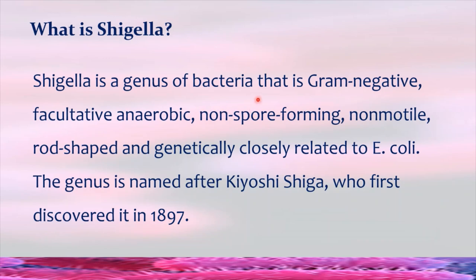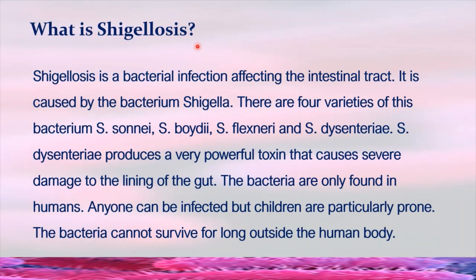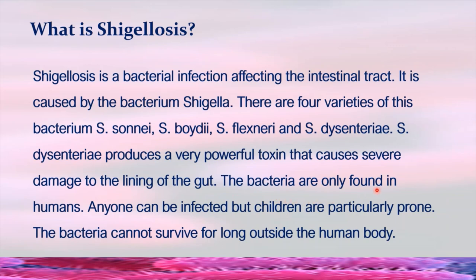What is the disease that this pathogen causes? That is Shigellosis. Shigellosis is a bacterial infection affecting the intestinal tract, caused by the bacterium Shigella. There are four varieties of this bacteria: Shigella sonnei, Shigella boydii, Shigella flexneri, and Shigella dysenteriae. Shigella dysenteriae produces a very powerful toxin that can cause severe damage to the lining of the gut.